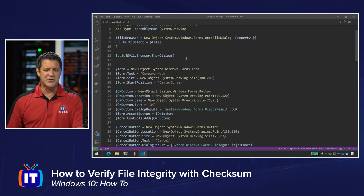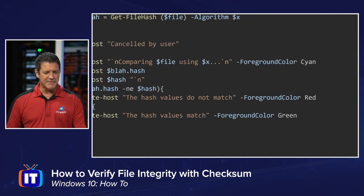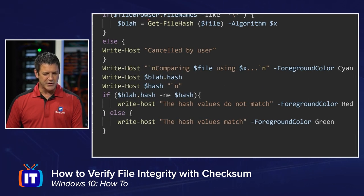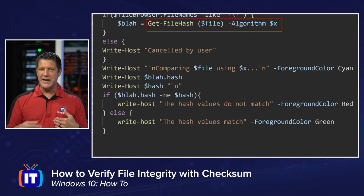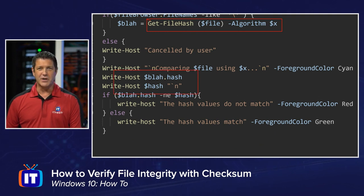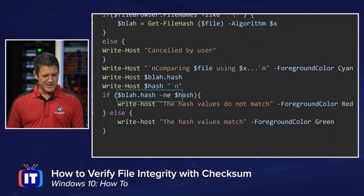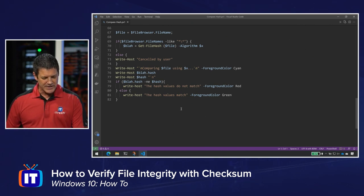Here's my script. Most of it is the form itself — making it pretty, the buttons, things like that. The meat of the script is right here: we get the file hash for whatever file you just downloaded, ask the user to paste in a hash value from the website, and then do the comparison. If one does not equal the other, it says they don't match. If they do match, it says they match. This file will be available for you — you can take it apart, dissect it, and learn from it.